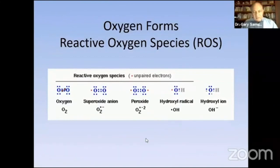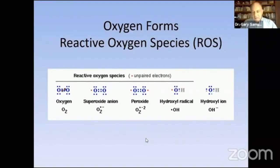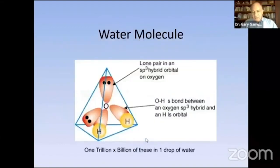When oxygen grabs an electron, it becomes a new thing. Oxygen, when it grabs an extra electron, becomes a superoxide ion. It grabs another and becomes a peroxide ion, like hydrogen peroxide. And then it grabs more and becomes more and more active. It also becomes more reduced, and the most reduced form of oxygen is water.